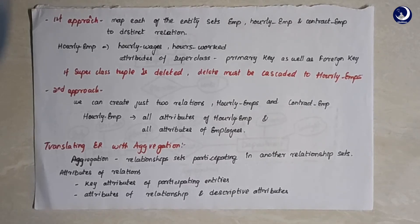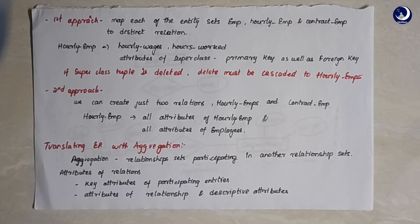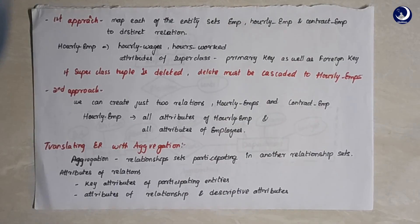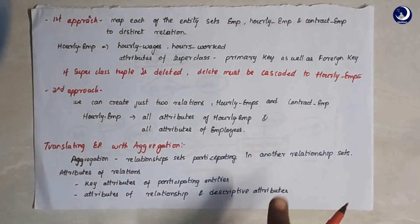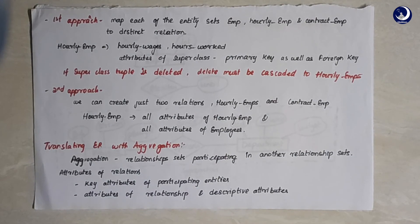The second approach is to create just two relations — hourly employee and contract employee — where each table includes all attributes of the subclass plus all attributes of the superclass employee. Instead of only taking the primary key as a foreign key reference, we include every attribute of the superclass directly in the subclass table. This means only two tables are created, each containing all attributes of both the subclass and superclass. These are the two approaches for translating a class hierarchy into a relational model.